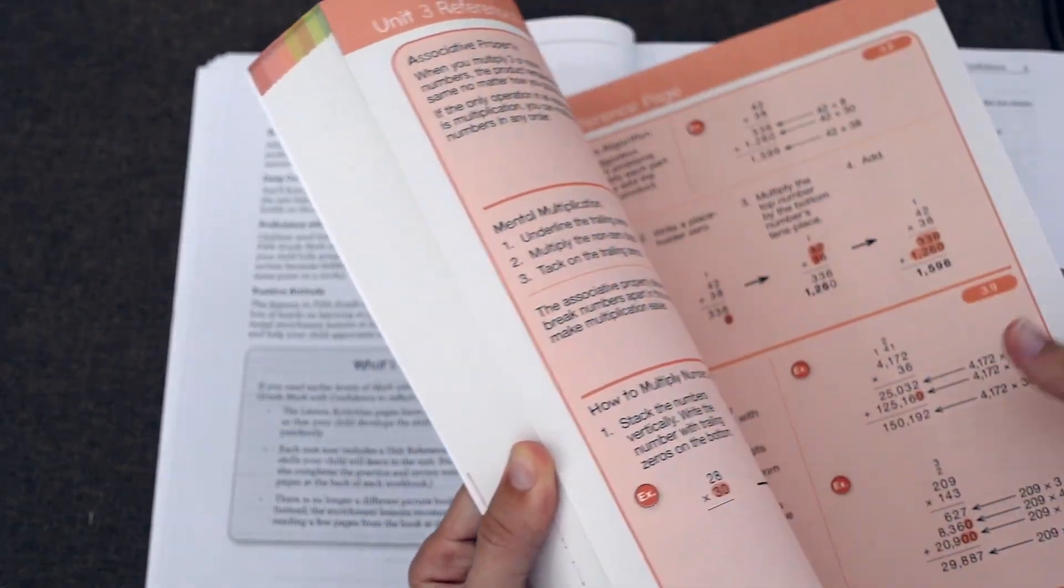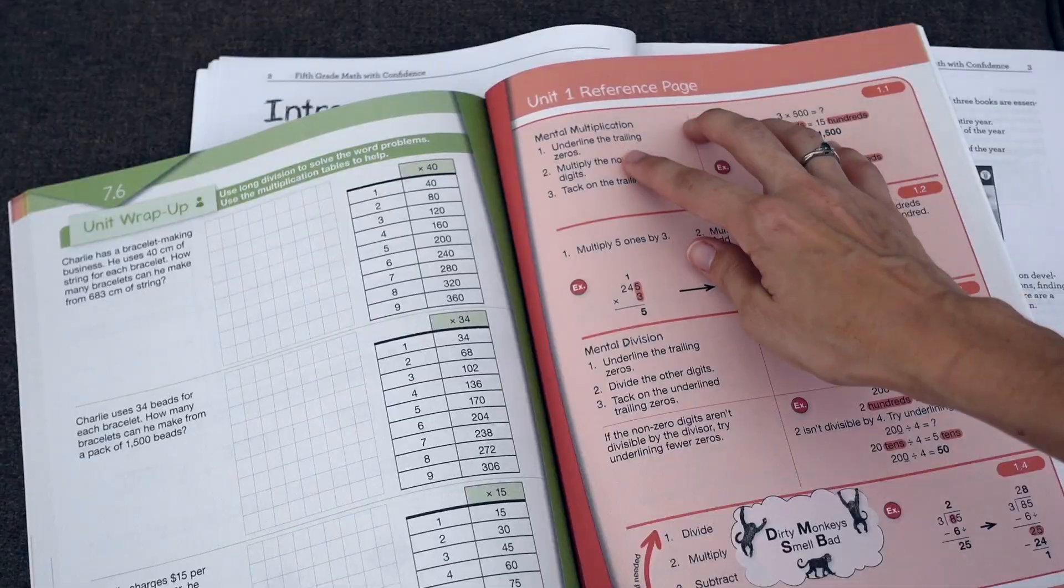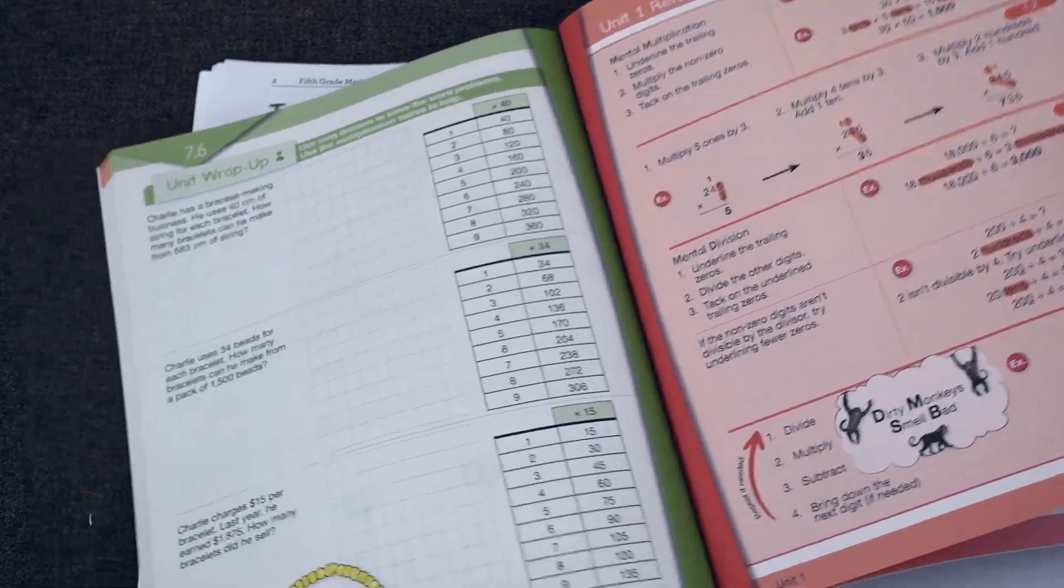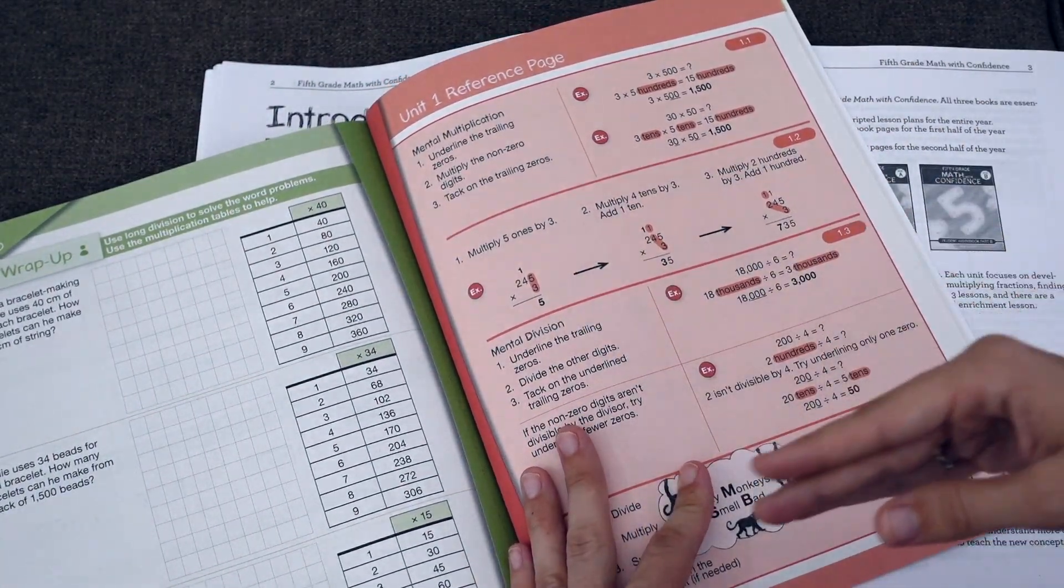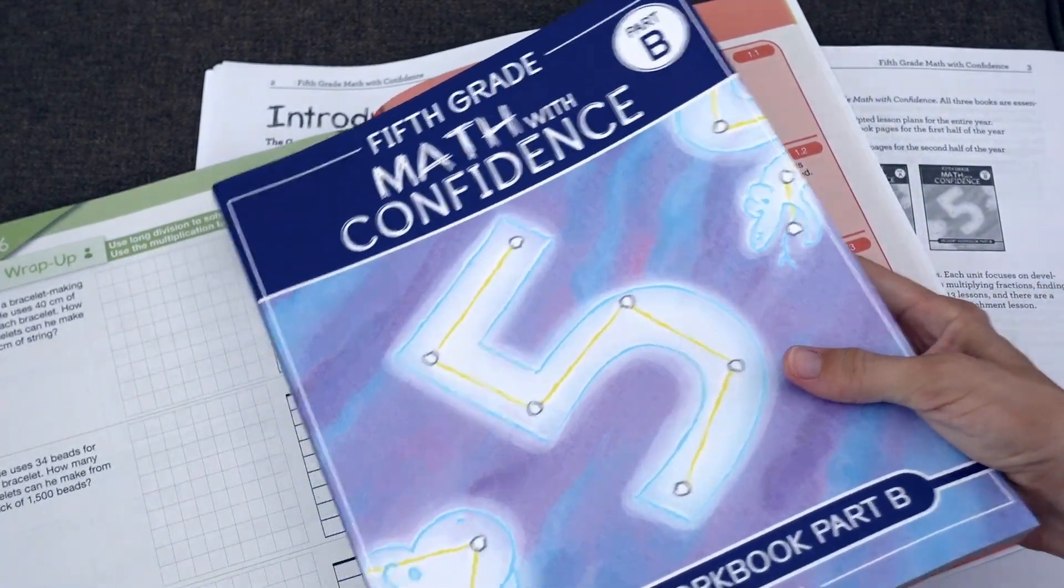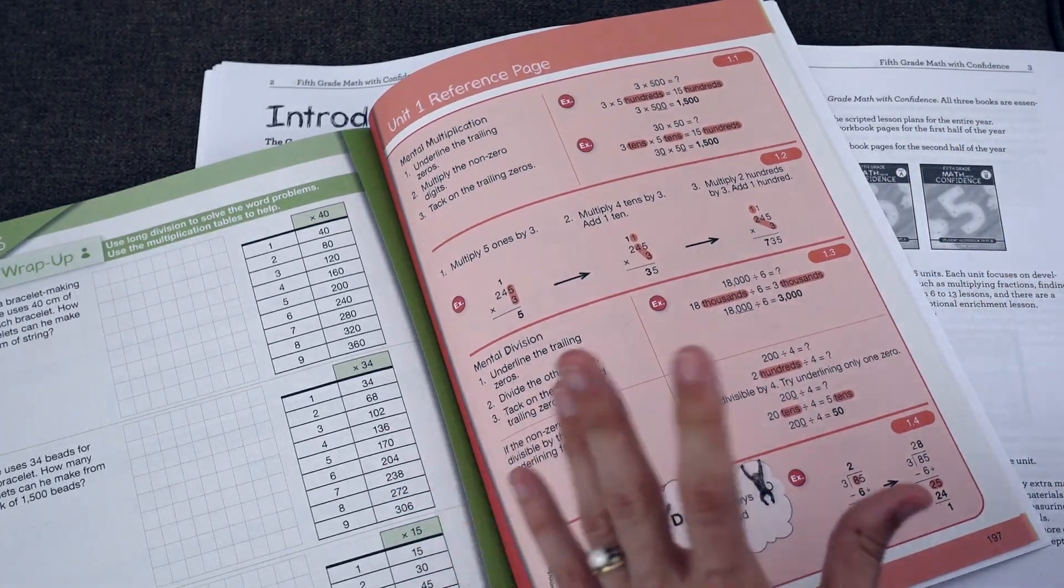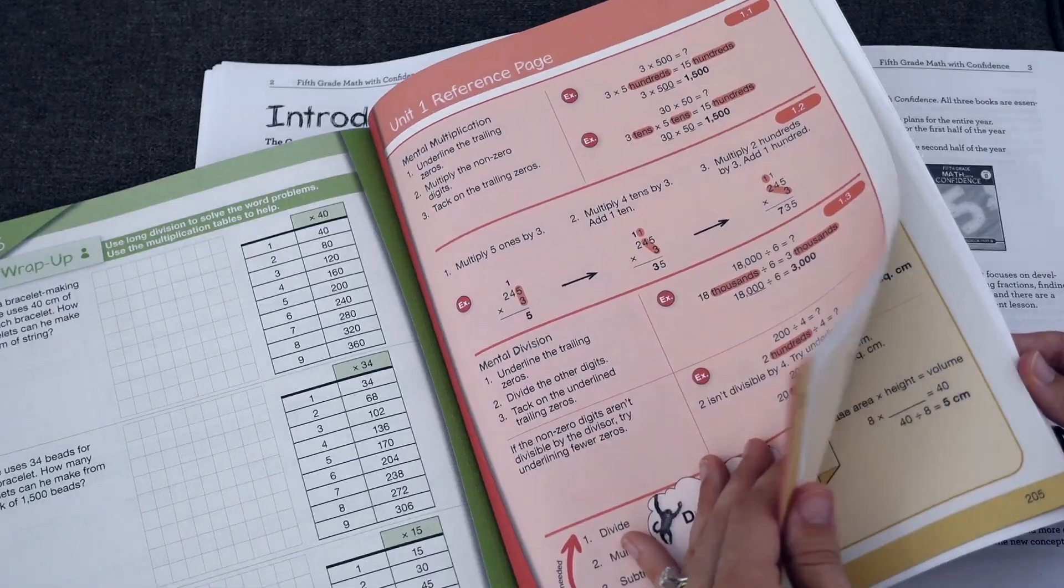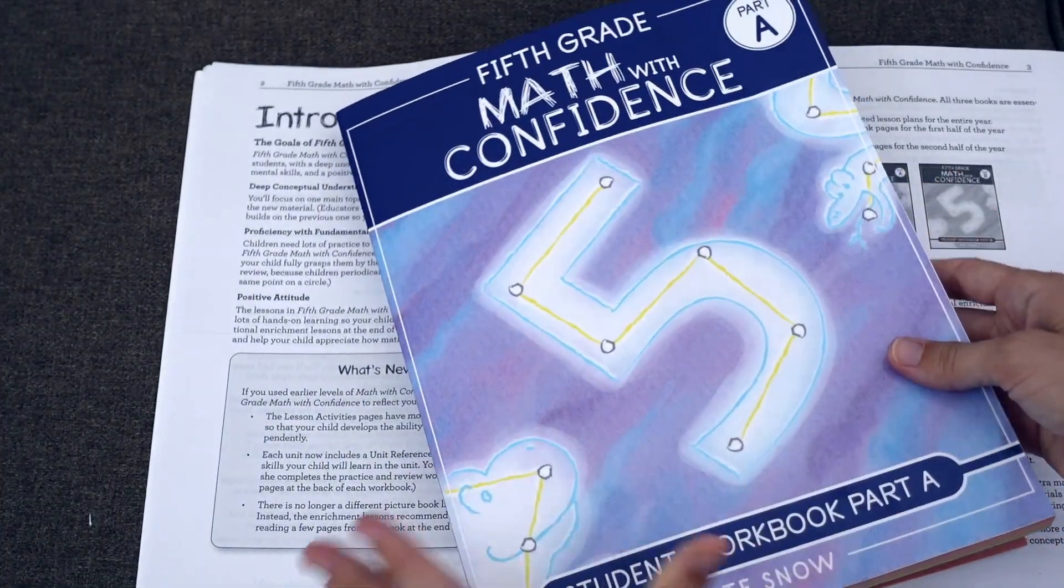Another difference is that there are now unit reference pages at the back of the book. So your student has these reference pages that cover basically a summary of all of the instruction that they learned from that unit. So that your student is learning the skill of, if they need a reminder, they can turn back to the reference pages. And there are reference pages in the back of student book A as well as B. So once you've moved on to B, you very well might want to take out these reference pages and put them in your student's master binder.